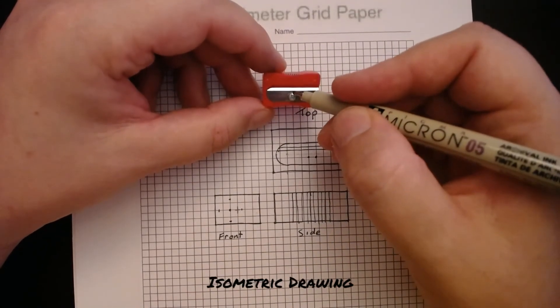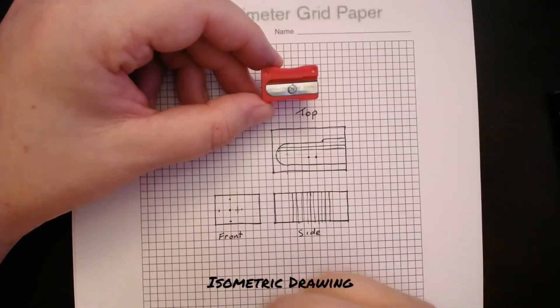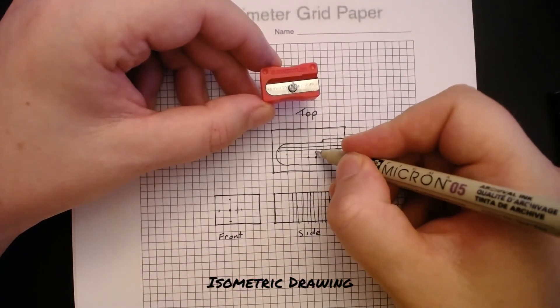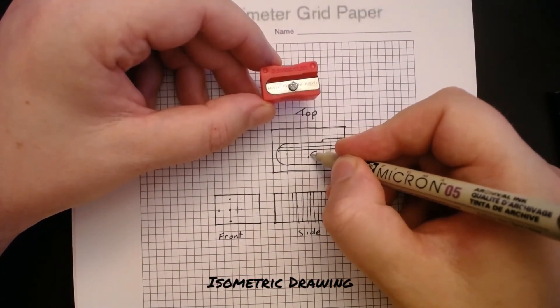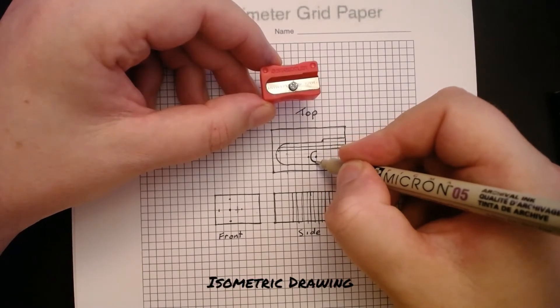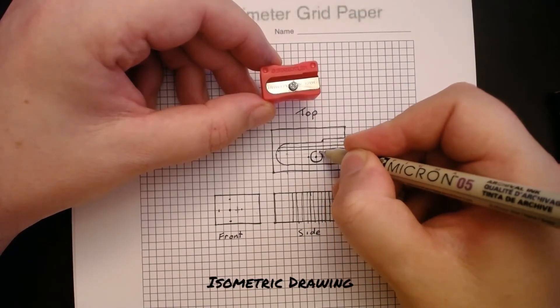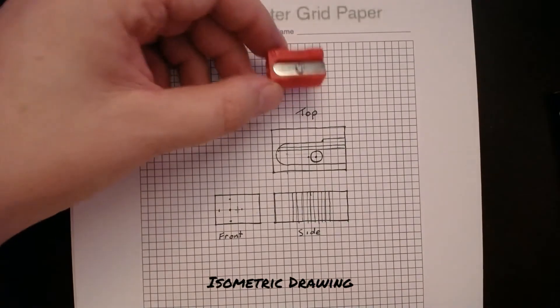And this circle doesn't quite go to either edge. So I'm going to go three-quarters of the way across. And there's the top of my screw.